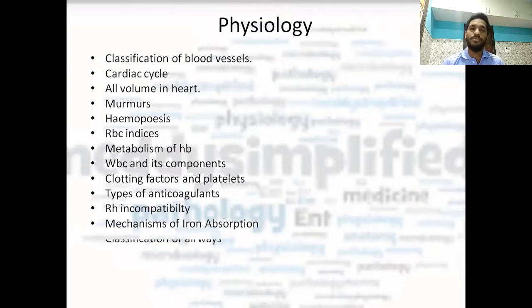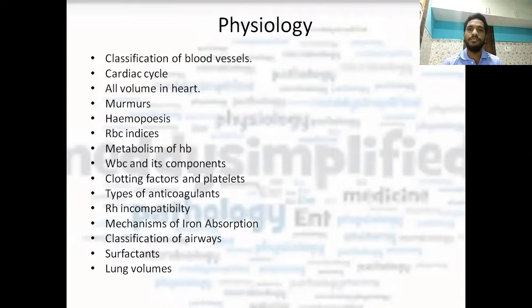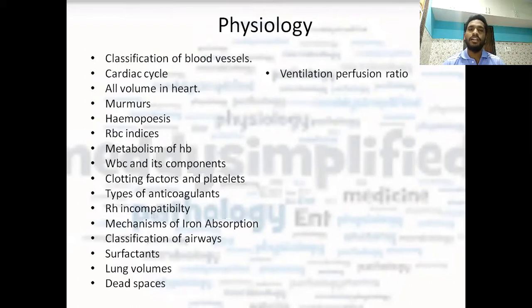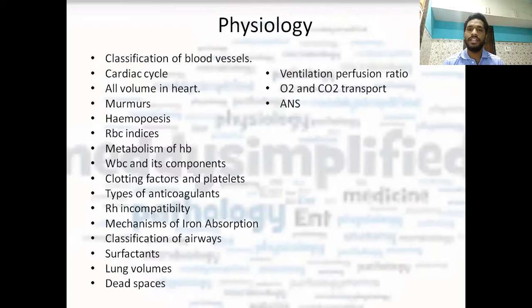Classification of airways, surfactants, lung volumes — all volumes in physiology are important. All the CVS volumes — end-diastolic and others — have already been mentioned. Then all the lung volumes are important, and the dead spaces — anatomical and physiological dead spaces. Ventilation-perfusion ratio: it is different at the base and different at the apex, so that is important to know. Oxygen and carbon dioxide transport, the Bohr effect, and the Haldane effect — these are important topics.